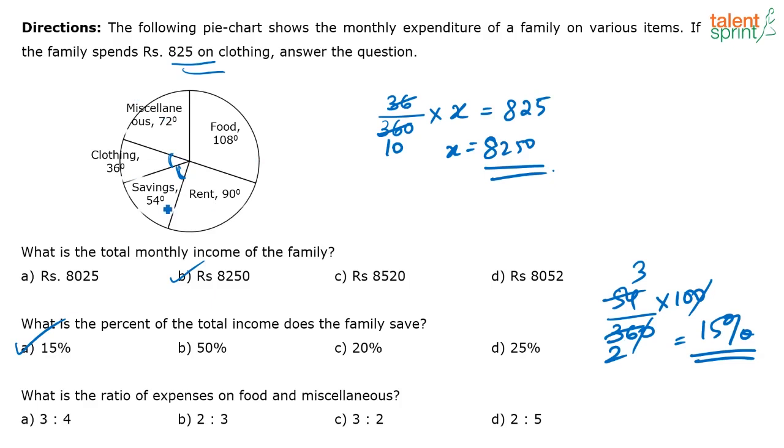In pie charts, what you have to see is they are giving you degrees. You have to consider the full circle is 360 degrees. Out of this, 54 degrees is for savings. So out of 360 degrees, 54 degrees is saving. What percentage is that? That's how we do.